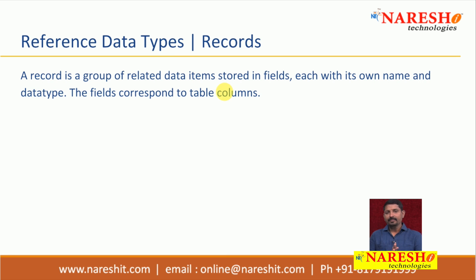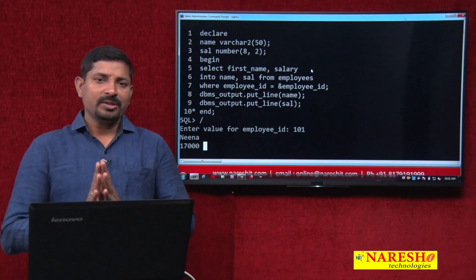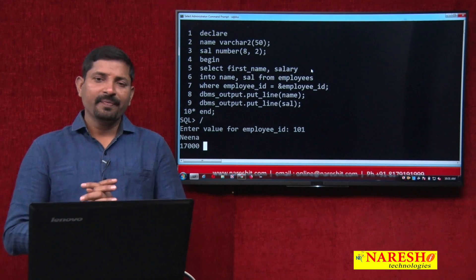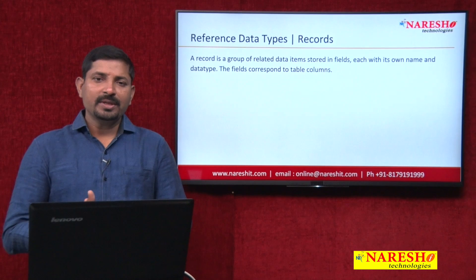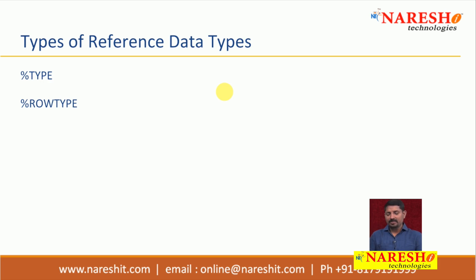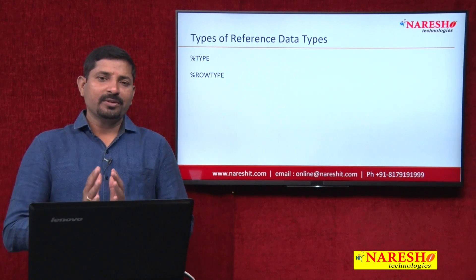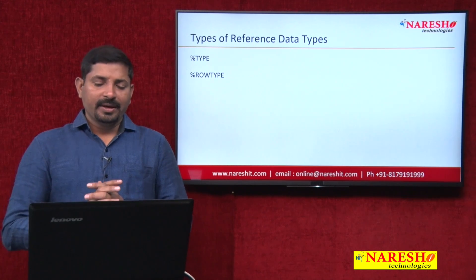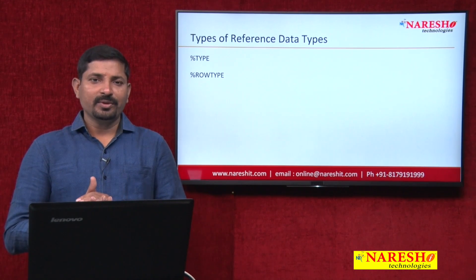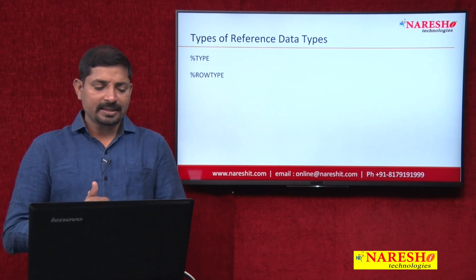Now, coming to reference data types. By using reference data types, you do not have to declare a separate variable with a static type — you just have to refer to the column in the table, and whatever is the data type of that column, it will be applicable to the variable. To achieve this, there are basically two types of reference data types: %TYPE and %ROWTYPE. %TYPE refers to a particular column and stores one value from that column into the variable. On the other hand, %ROWTYPE refers to the whole record, and all the values in that record are stored into the variable.